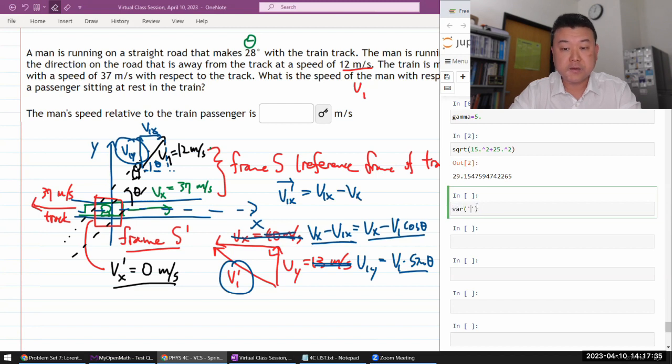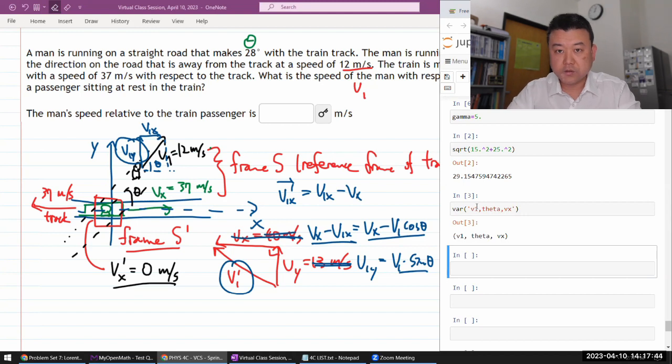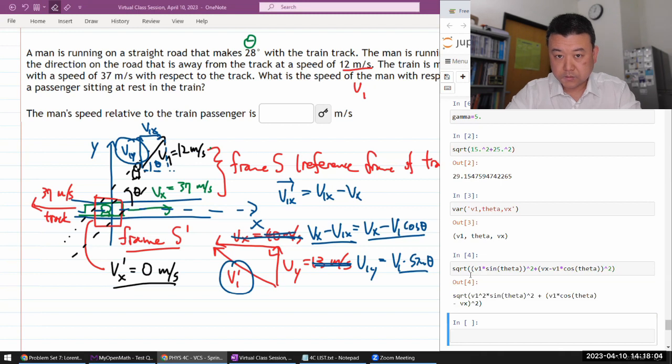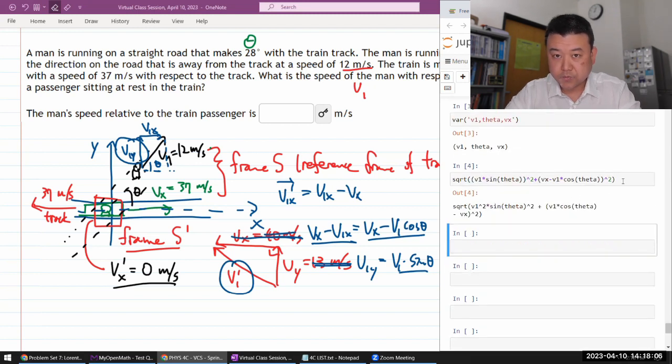So, let me do it this way. So, let me declare the variables. I have v_1, theta, and v_x. So, the expression I'm trying to calculate is the square root of v_1 times sine of theta squared plus v_x minus v_1 times cosine theta squared. Okay, that looks like a decent expression. So, now what I do is substitute the values.